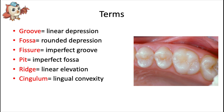A groove is a linear depression in a tooth, and they come in different shapes and sizes. Developmental grooves are the largest, formed by the uniting of lobes during crown development. For example, on tooth number 12 there's a central groove between the three facial lobes and the lingual lobe. There are also smaller, shallow supplemental grooves that give the occlusal surface a more wrinkly appearance. A fossa is a shallow rounded or angular depression, usually at the coalescence of multiple grooves — for example, a premolar may have two triangular-shaped fossae.